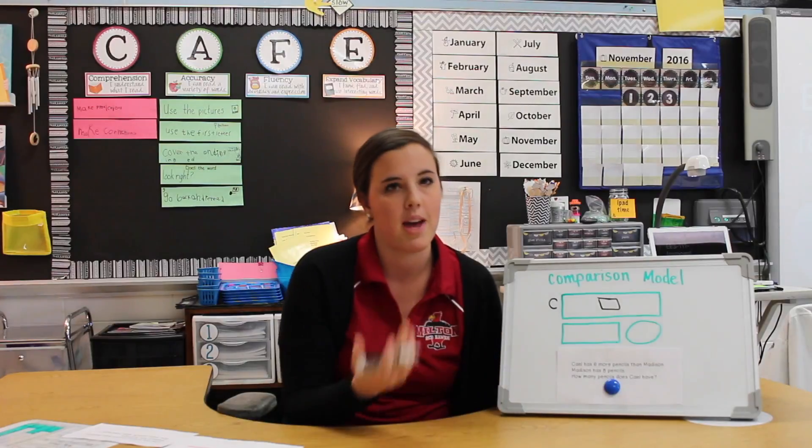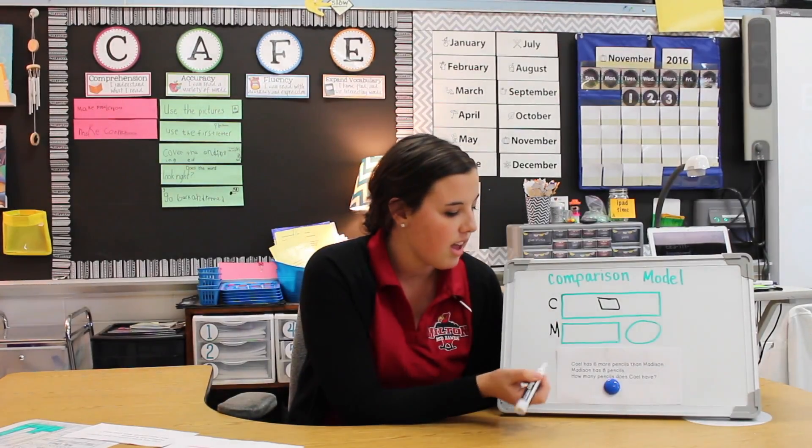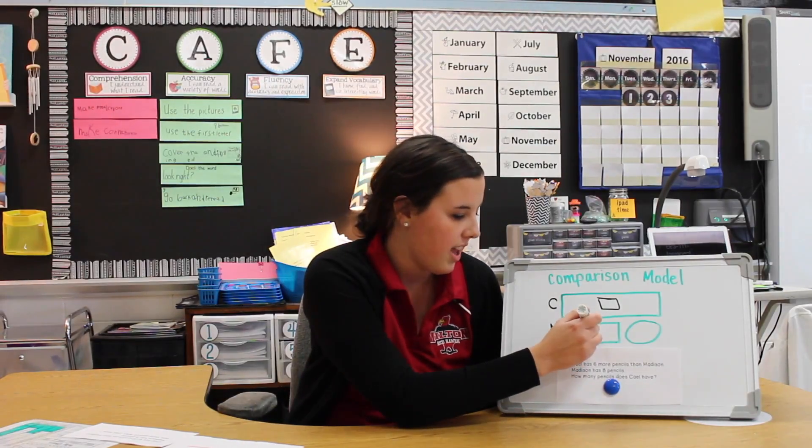In the smaller bar, we know that Madison has less than Cal, so we'll put an M for Madison and then we'll put how many pencils Madison has since we know. So now I'm going to write an eight.